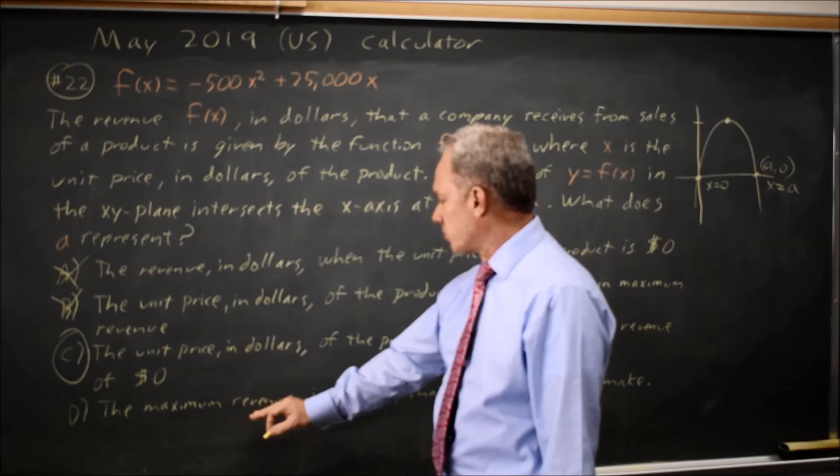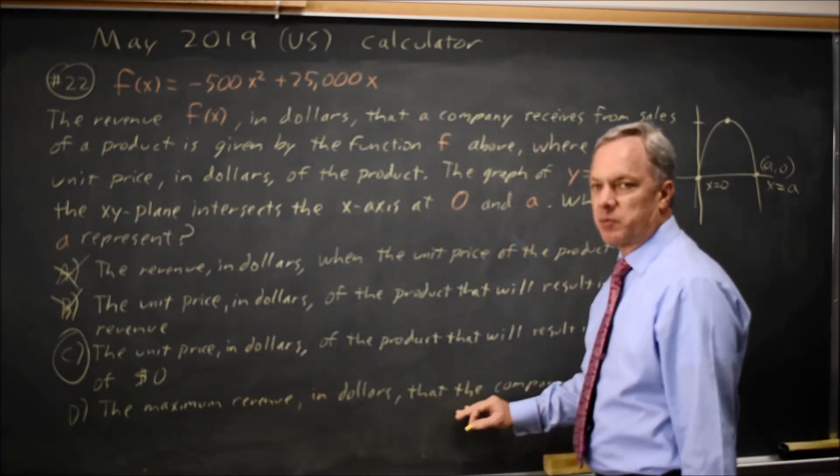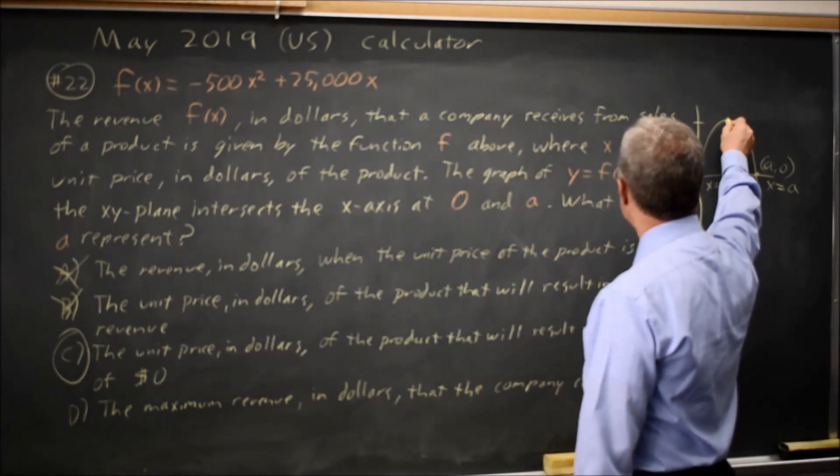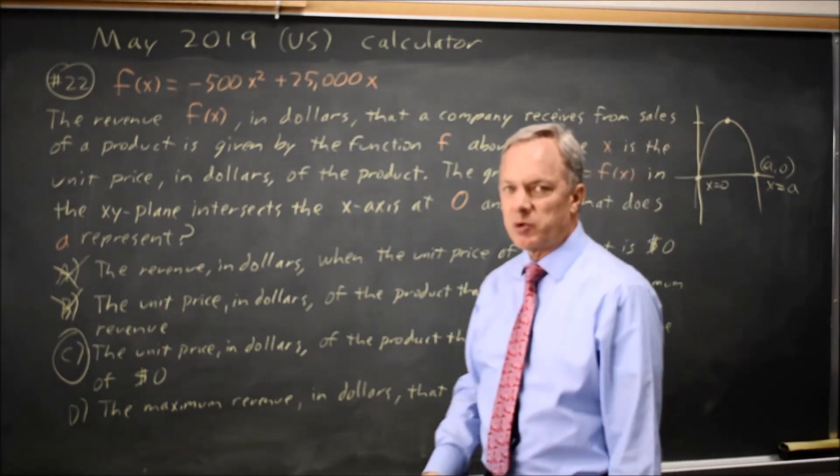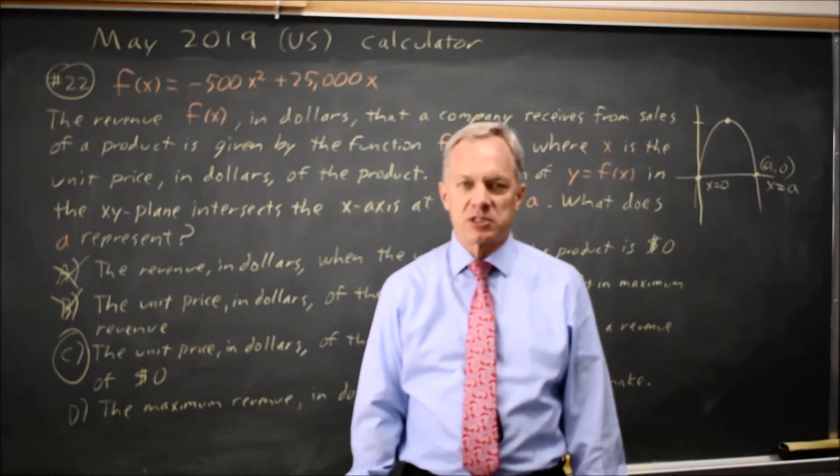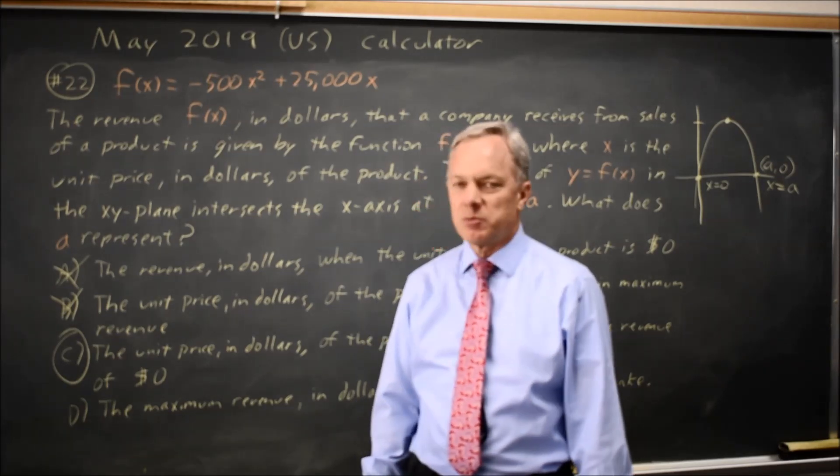Choice D is the maximum revenue in dollars the company can make, but no, the maximum revenue would be the y value at this point midway between x equals 0 and x equals A. So our answer here would be C.